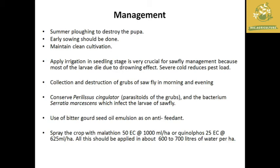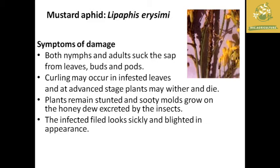The next pest is mustard aphid, scientific name Lipaphis erysimi. Both nymphs and adults suck sap from leaves, buds, and pods, causing curling of leaves at advanced stages. In severe infestation the whole plant can wither and die. The insects also secrete honeydew, which leads to secondary infections like sooty mold. Infected plants look sickly and stunted.